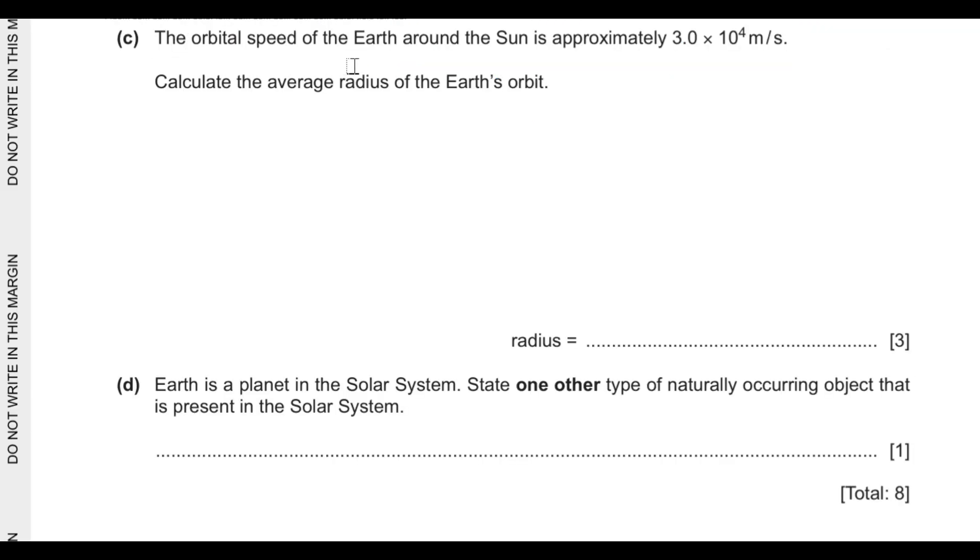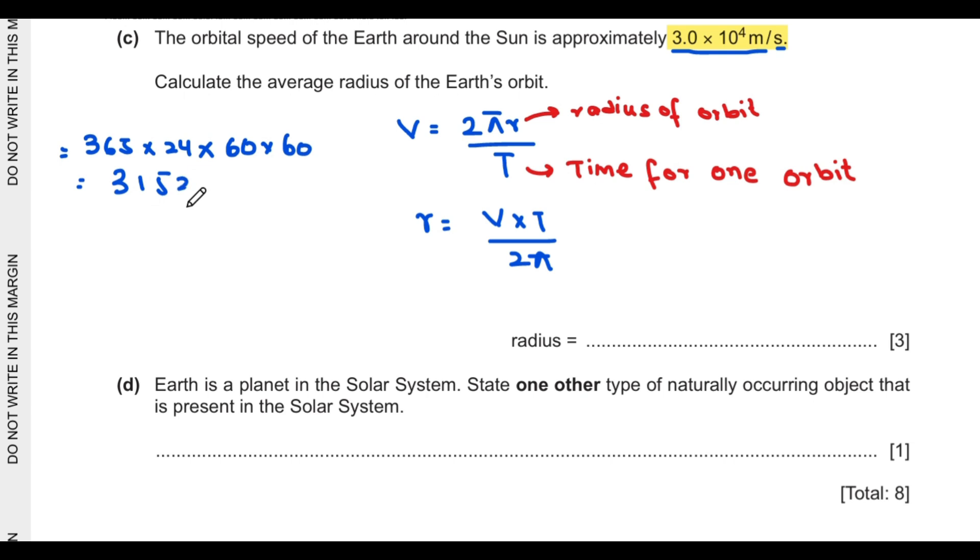Part C says the orbital speed of Earth around the Sun is approximately 3 into 10 raised to power 4 meters per second. Calculate the average radius of Earth's orbit. Orbital speed is written as v equals 2 pi r over t, where r is radius of orbit and t is time for one orbit. Rearranging the equation with respect to radius. V is 3 into 10 raised to power 4. Time for one complete orbit is 365 days, which equals 31536000 seconds. Putting all values in the equation, the radius of the orbit is 1.5 into 10 raised to power 11 meters.